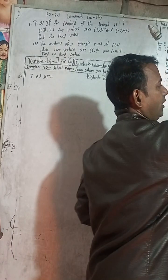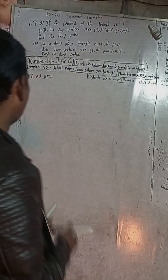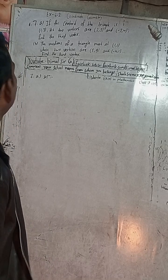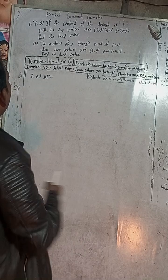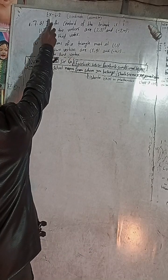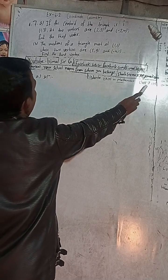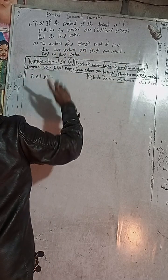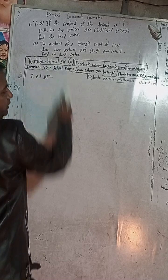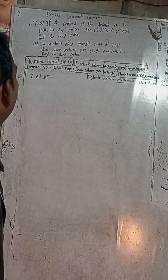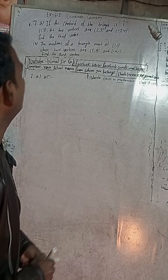Hi class 9 and 10 students, welcome back to Bimalsarji's YouTube channel! In this chilly cold season, I am here to warm up your days and nights with exciting content. Let's make the winter season a little warmer with mathematical solutions for class 9 and 10 — question 7a, exercise 6.2, coordinate geometry from Optional Mathematics class 9. Don't forget to check the playlist of Bimalsarji for a lot of solutions. If you don't find any, comment and I'll help you.